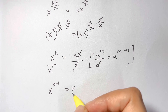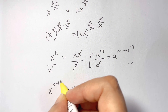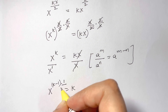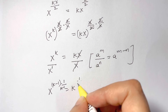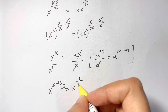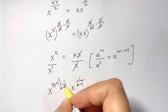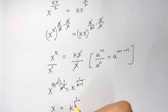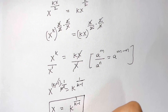Now we raise both sides to the power of 1 over k minus 1, so the exponent on x cancels. We are left with x equals k to the power of 1 over k minus 1. So we have found the value of x in terms of k.